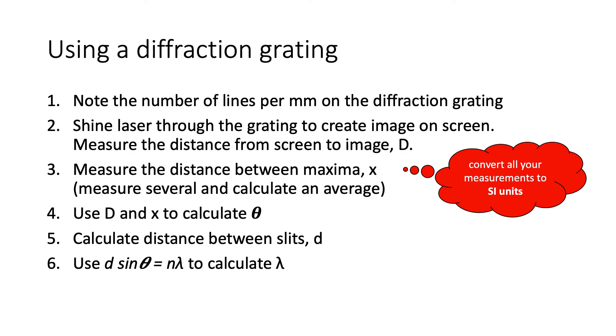We use D and x to calculate theta. And then once we've done that, we use the distance between the slits. You know how many lines per millimetre there are on the slide, it tells you. So you just do one over that number to calculate the distance between the slits. Remember to convert the slits. And then you can use d sin theta equals n lambda to rearrange to calculate the wavelength of the light.